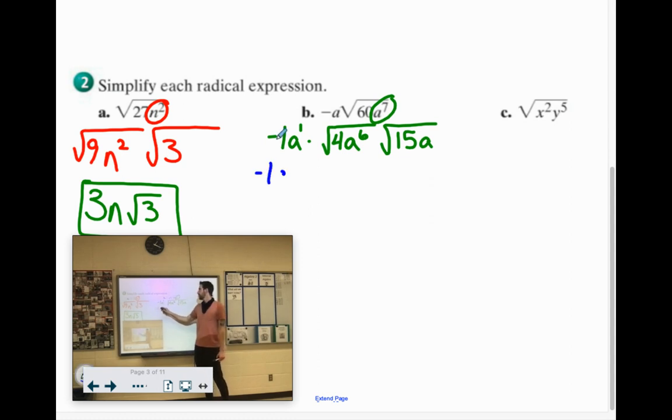So let's see. -1a¹ times the square root of 4 is 2. Square root of a⁶. Divide that exponent by 2. So that would be a³√15a. And then our last step is we have this stuff to combine.